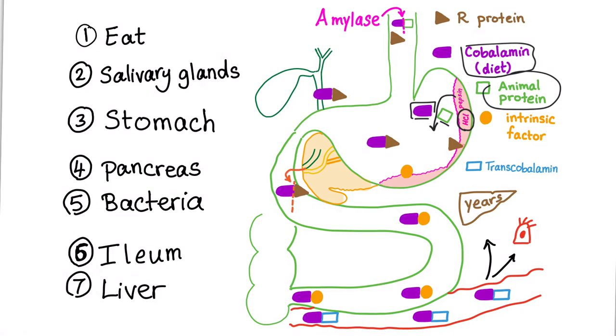Now this cobalamin will be bound to the R protein from your salivary gland. Why? To protect it from your gastric acid. We have now the cobalamin and the R protein. Also, note that gastric secretion is a source of R protein, as well as your biliary system. All of them will produce R protein.